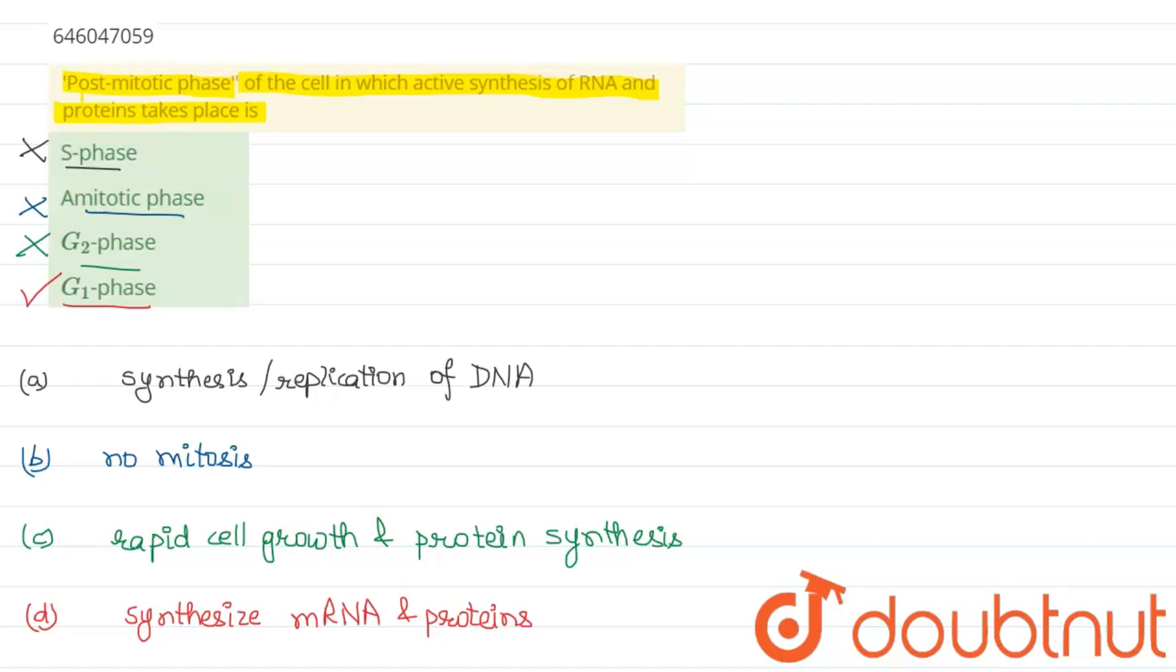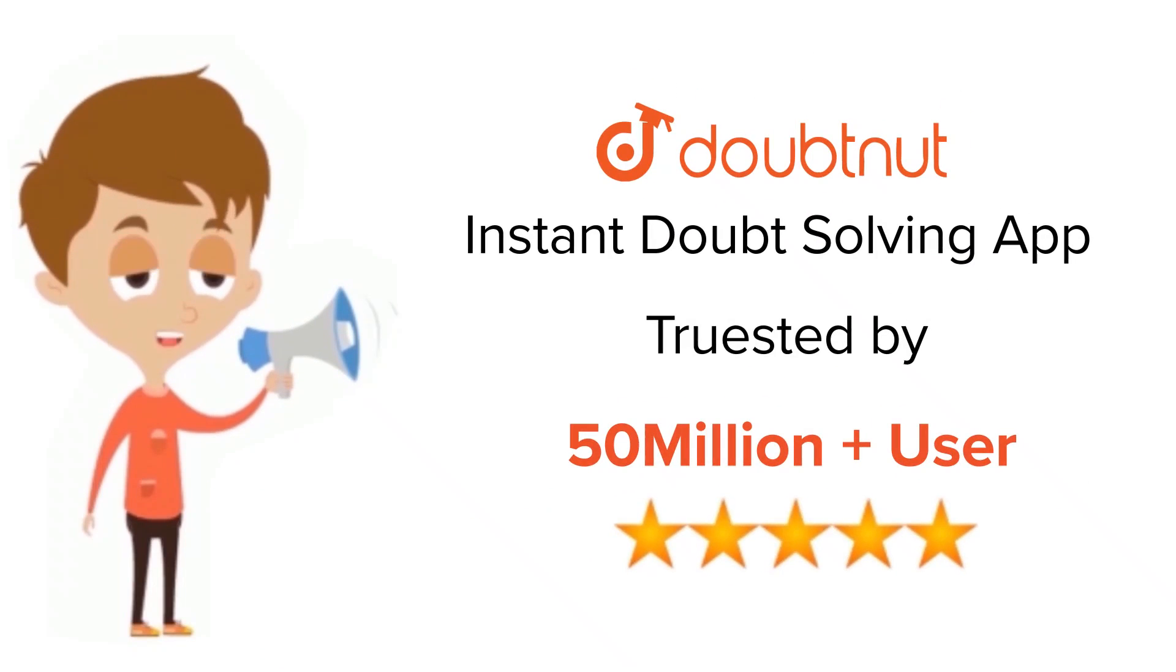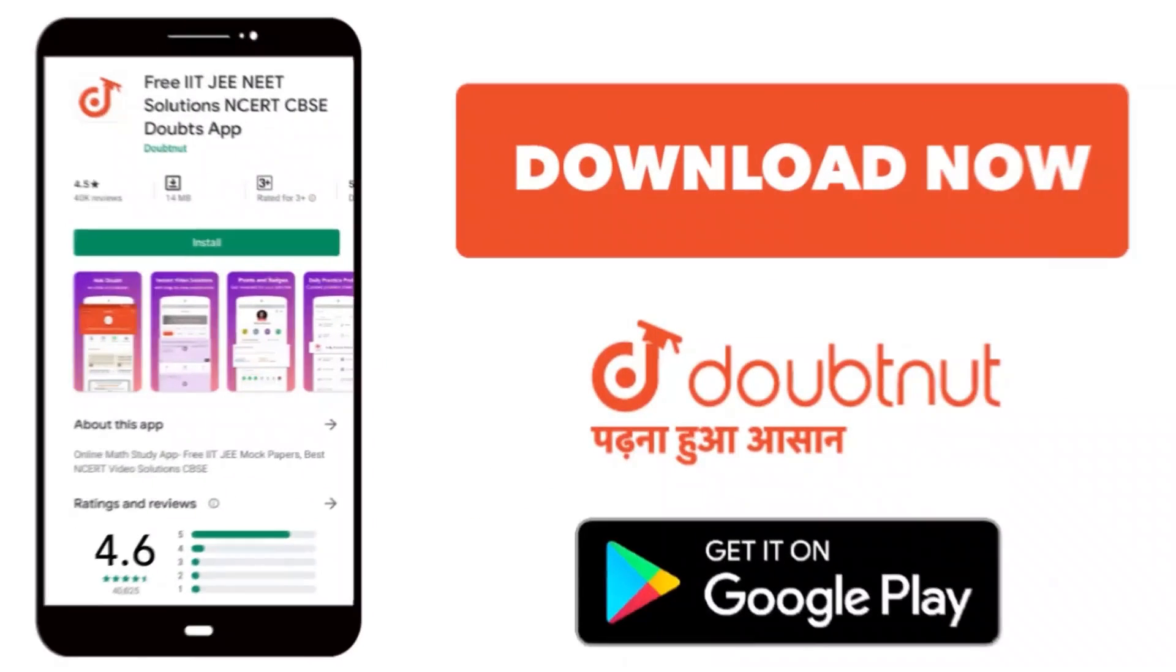Hence we have the final answer as: post-mitotic phase of the cell in which active synthesis of RNA and proteins takes place is G1 phase. For class 6-12, IIT-JEE, and NEET level, trusted by more than 5 crore students, download Doubtnet app today.